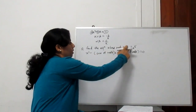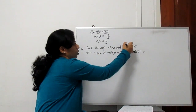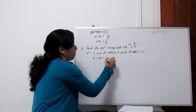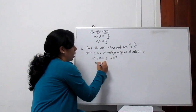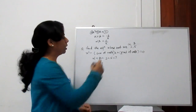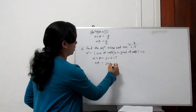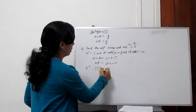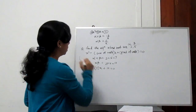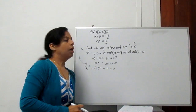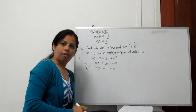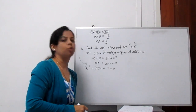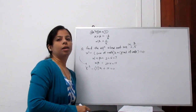So if alpha is 2 and beta is 5, then the sum of roots alpha plus beta is 2 plus 5, which equals 7. The product of roots alpha times beta is 2 times 5, which is 10. So our equation becomes x² minus 7x plus 10 equals 0. This is the solution — given any roots, substitute the sum and product and you will get the quadratic equation.